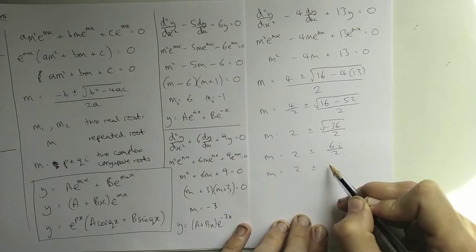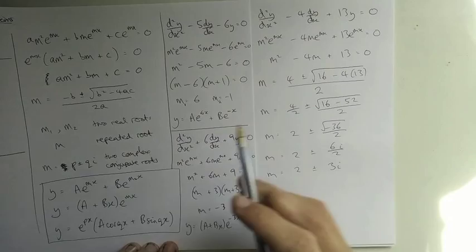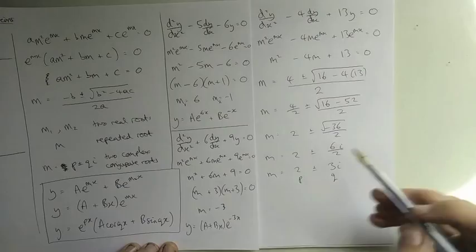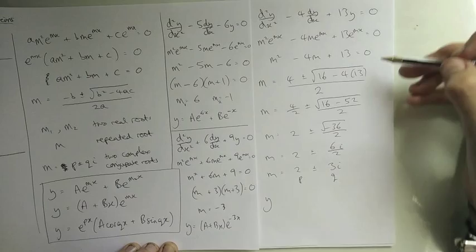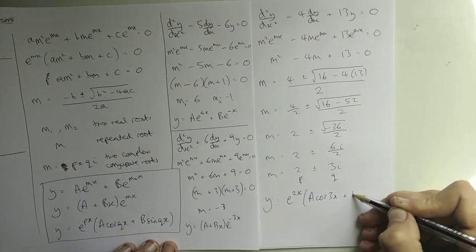Comparing this to the complex conjugate form p ± qi, we can see p = 2 and q = 3. Note that q is always taken as positive; p can be positive or negative. Using the complex conjugate solution form, our answer is y = e^(2x) (A cos(3x) + B sin(3x)), and that is the solution to this differential equation.